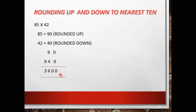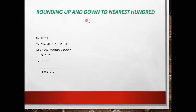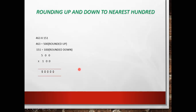Multiply 90 × 40 and you get 3,600 as the answer. Next, rounding up and down to the nearest 100: 463 × 151. For 463, the tens digit is 6, which is greater than 5, so it rounds up to 500. For 151, rounding down gives 100. Multiply 500 × 100 and you get 50,000 as the answer.